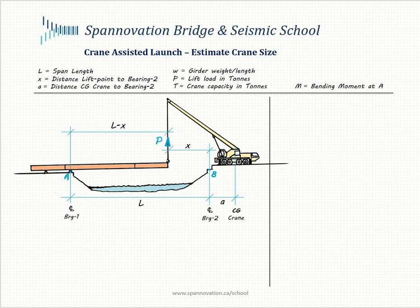Typically the system is launched up until mid-span. After that the crane starts assisting and providing a tip support, and as the radius of the lift reduces, the pick weight keeps increasing until the girder gets to point B, where the crane then also assists in setting that end of the girder on top of the permanent bearings.